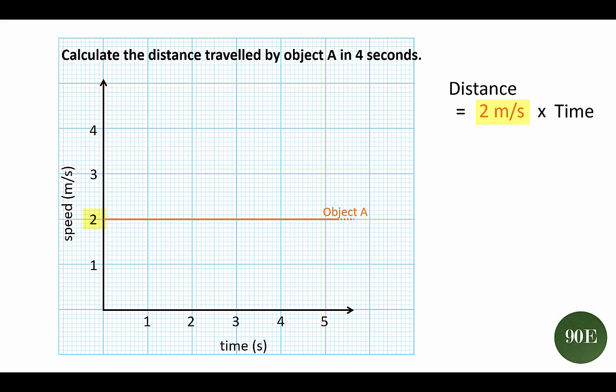We've been asked to calculate the distance traveled in 4 seconds, so that's our time. We'll put that into the equation too. And 2 meters per second times by 4 seconds is equal to 8 meters. So that's our first method.